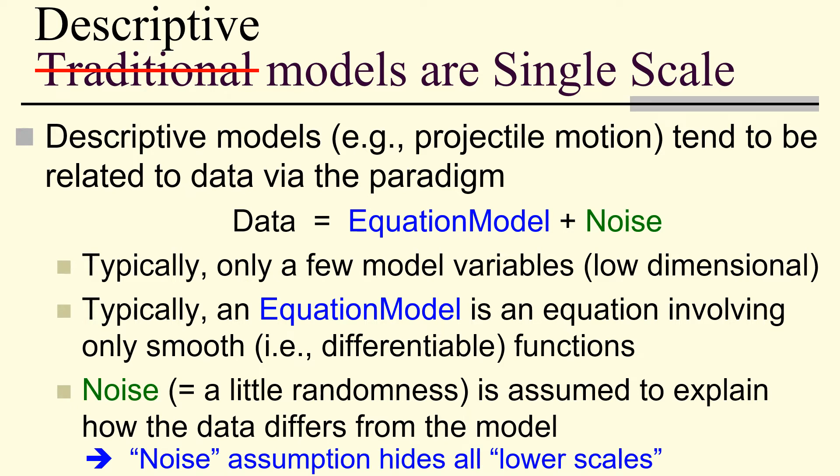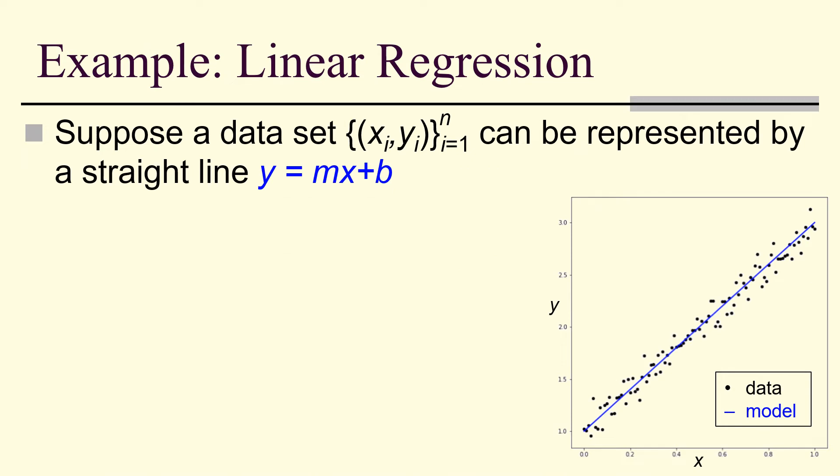So, the noise assumption hides all the lower scales. The largest scale is modeled by the equation. And then everything else is packed into the noise.